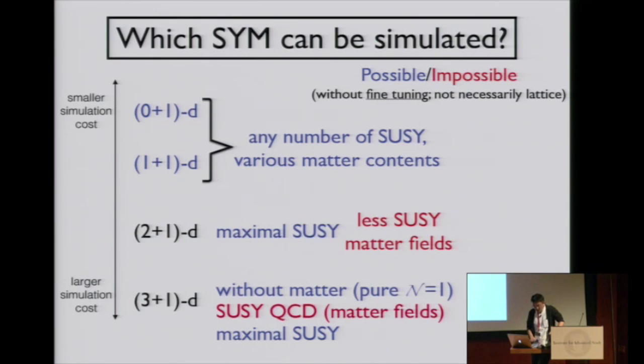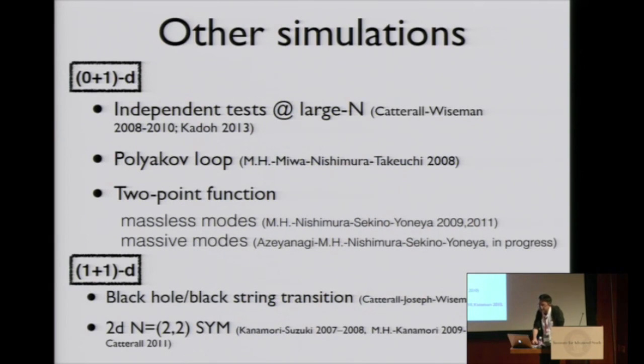For other, I said other theories can also be studied. So what is going on? In 0 plus 1 dimension, Catterall, Wiseman, and Kadoh did independent tests at large n, and their result is consistent with ours.